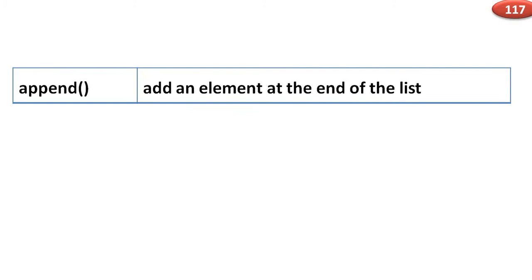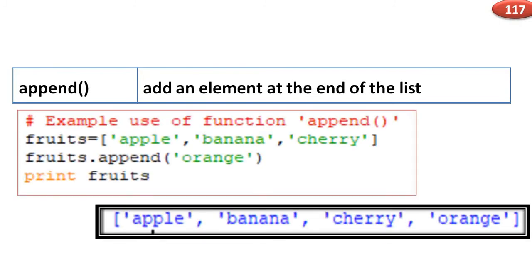append() adds an element at the end of the list. For example, fruits assigned apple, banana, cherry — fruits.append(orange) — after printing, the result is apple, banana, cherry, orange.